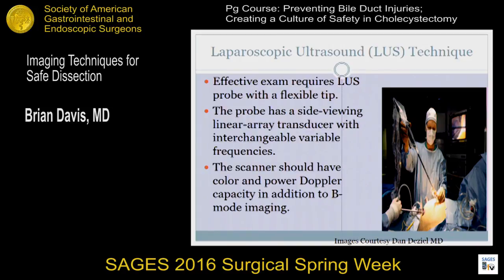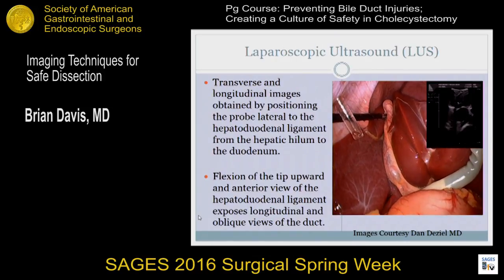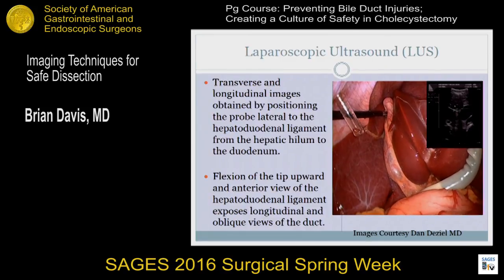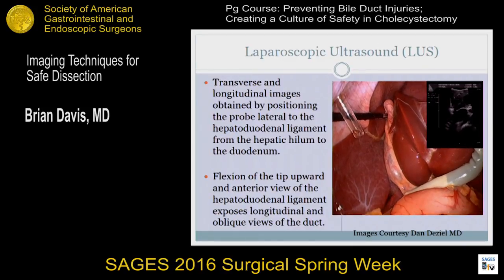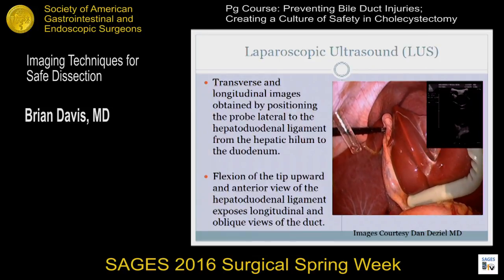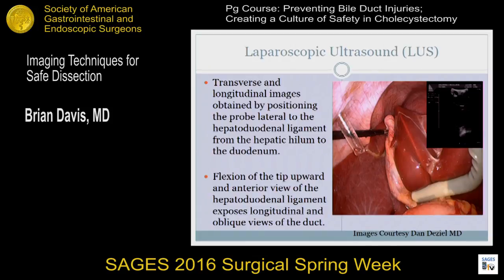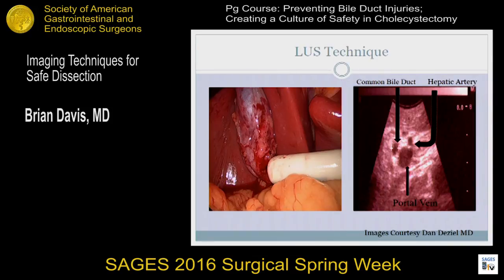Moving on to laparoscopic ultrasound technique, pioneered here from Chicago by Dr. Diehl, using a laparoscopic ultrasound probe with a side-viewing linear array transducer. The advantage of laparoscopic ultrasound is the color-powered Doppler waveform to allow identification of the cystic artery at the same time as identifying the duct. This video demonstrates moving from the ampulla to the cystic duct–common hepatic duct junction, with a picture-in-picture view to allow anterior view of the hepatoduodenal ligament, exposing longitudinal and oblique views, and the Mickey Mouse view with the common bile duct, hepatic artery, and portal vein easily in view.